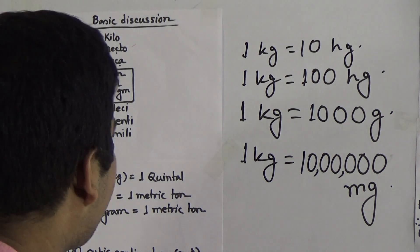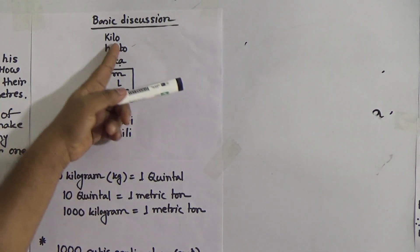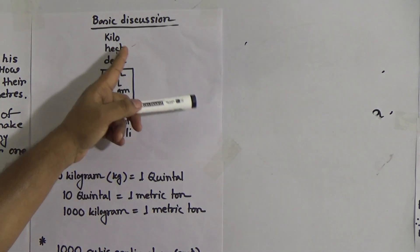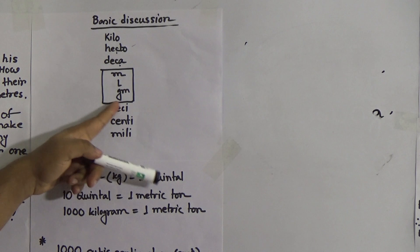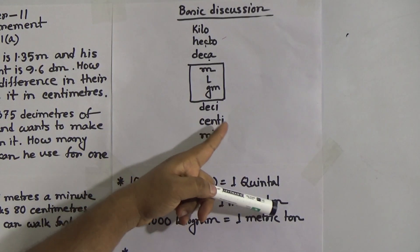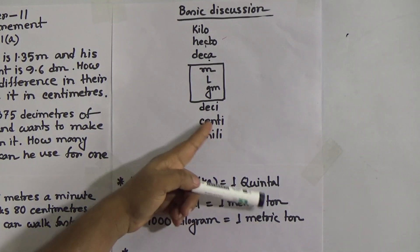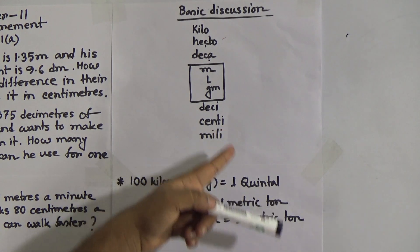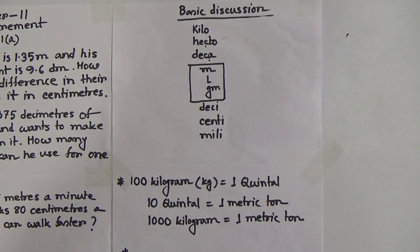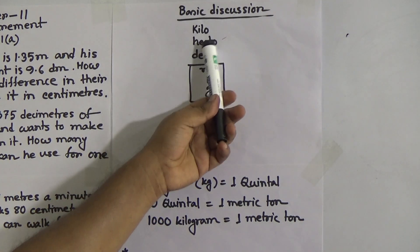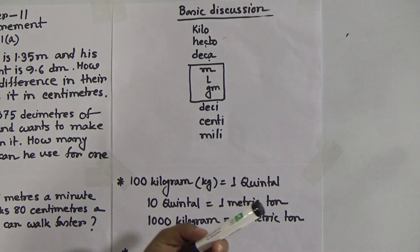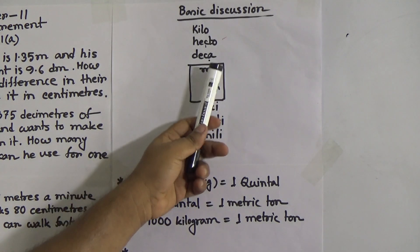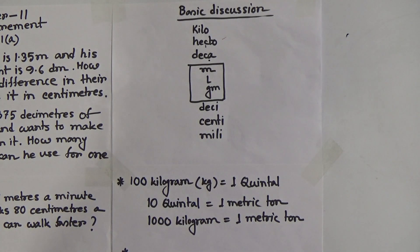Similarly, one hectogram equal to how many decagrams — that is 10. One decigram equal to how many centigrams — that is 10. One centigram equal to how many milligrams — that is 10. The same rule applies for length: one kilometer equal to how many hectometers is 10, and one kilometer equal to how many decameters is 100.